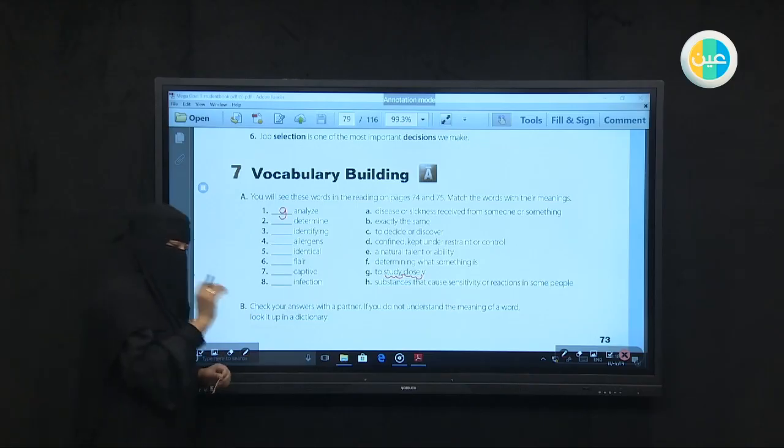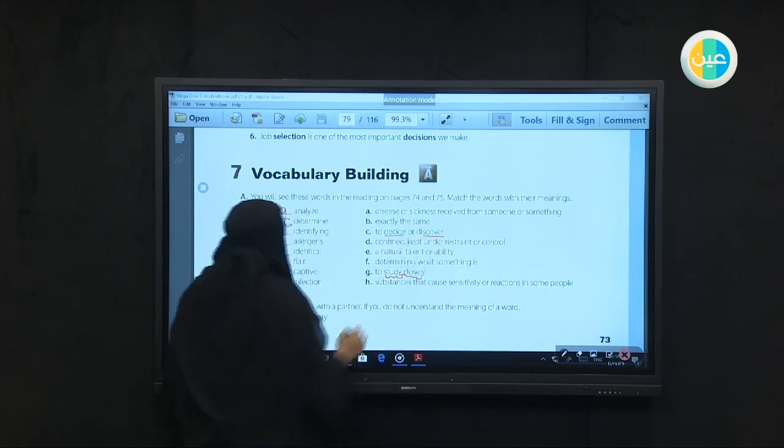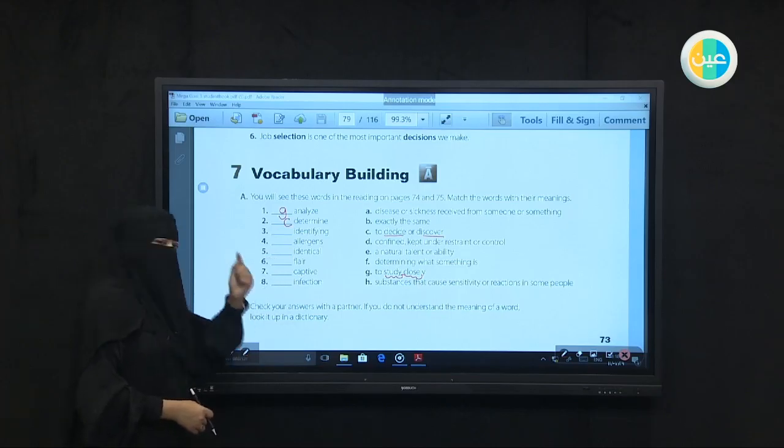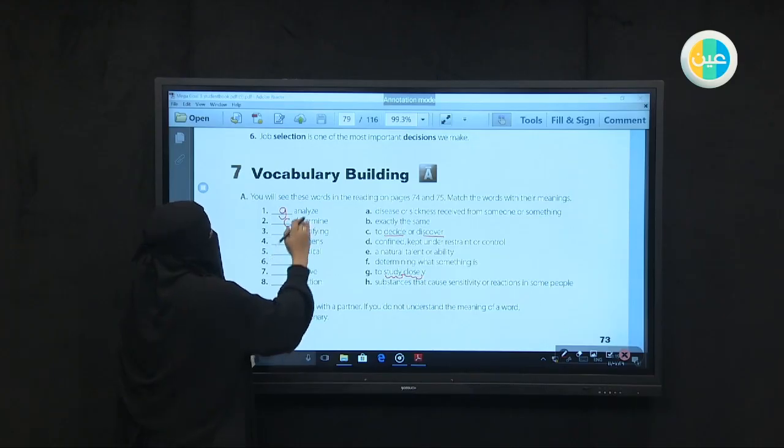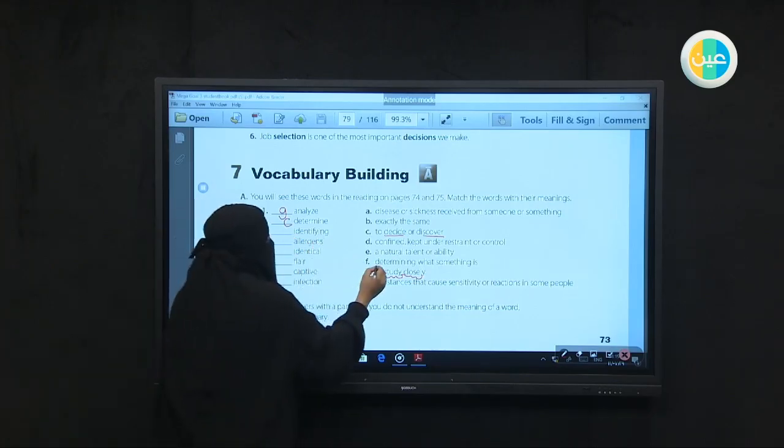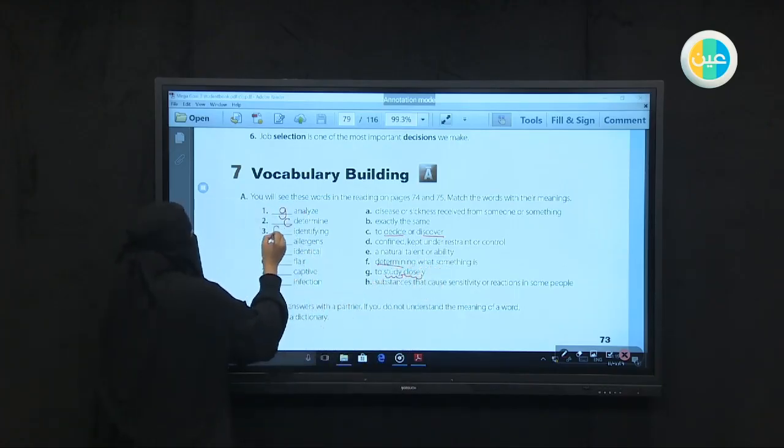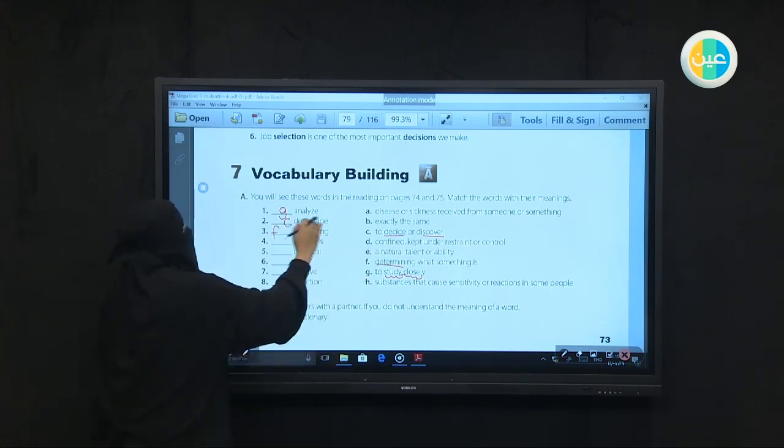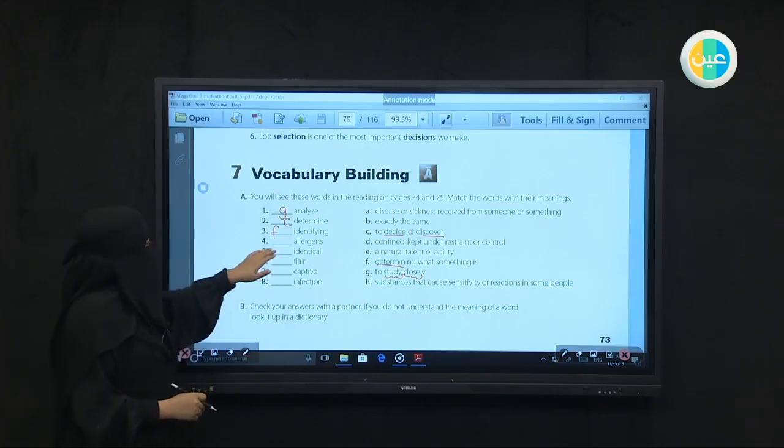Now, identifying - when I distinguish one thing from all the others and can give it a name and determine precisely what its characteristics are. This is more precise than determine. So you'll find in its meaning the word determine comes. Identifying will be F - to determine what something is. It becomes specific after I determined its shape and type in the beginning. Here in identify, it gets a name and precise identification.